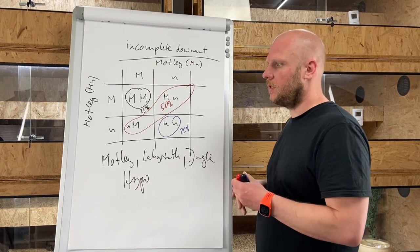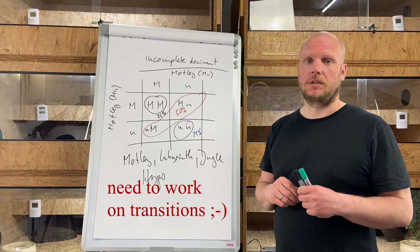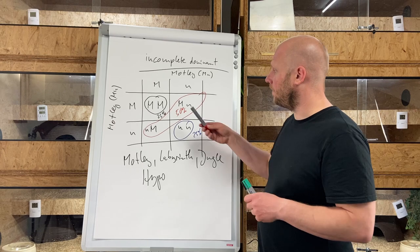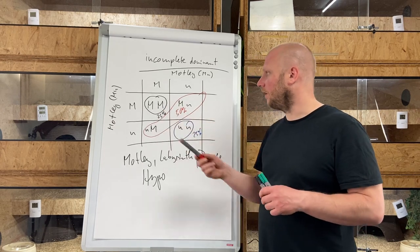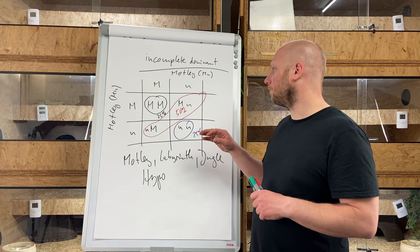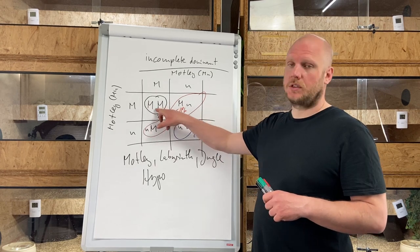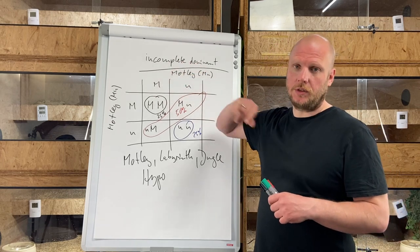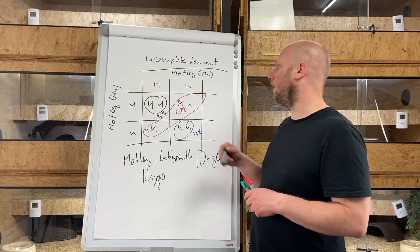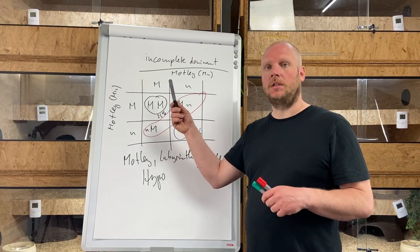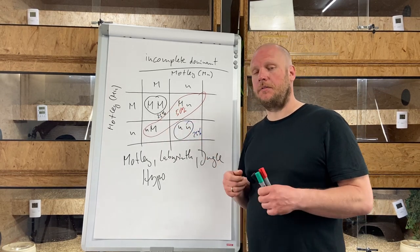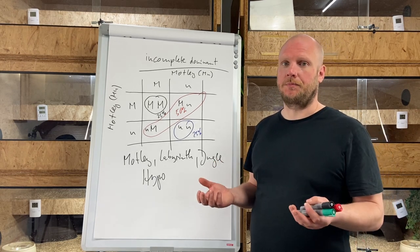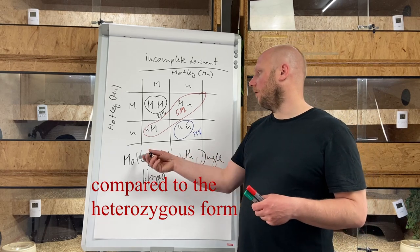The difference between incomplete dominant and a dominant morph are these 25% here in the top left corner, because this is a homozygous form. If you have incomplete dominant morph, the homozygous form you can tell, you can identify by the look at it because it has a different appearance.